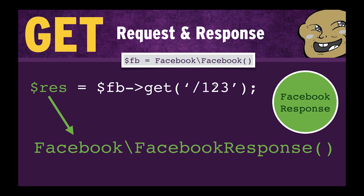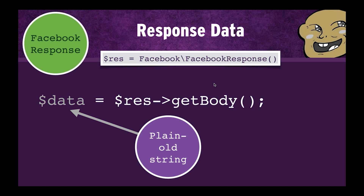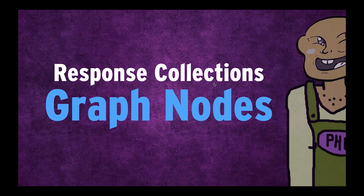Once that response comes back, it will be encoded into a Facebook response entity, and we can play with that. Since it's an HTTP response, we get things like getStatusCode and similar HTTP response properties. There's one called getBody, so you just get a plain old string of whatever the Graph API returns. But it often returns the response in the form of JSON, so why not try getDecodedBody? That will return a nice plain old PHP array. What if we wanted to take it further and get the response back in the form of a collection or graph nodes?